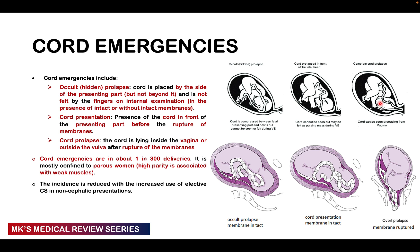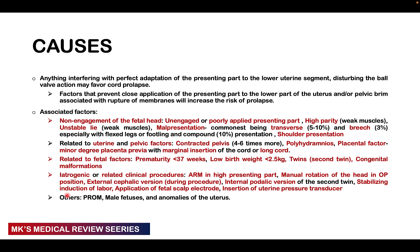Then we have complete cord prolapse, or simply cord prolapse, where the cord is now lying inside the vagina or may even be at the vulva after the membranes have ruptured — this is our overt cord prolapse. Remember that these cord emergencies occur in about 1 in 300 deliveries, are most common in parous women with high parity due to weaker muscles, and the incidence is actually reduced with increased use of elective cesarean section in non-cephalic presentations.